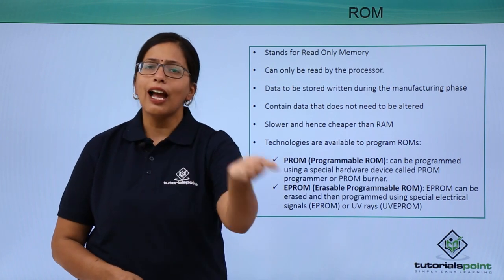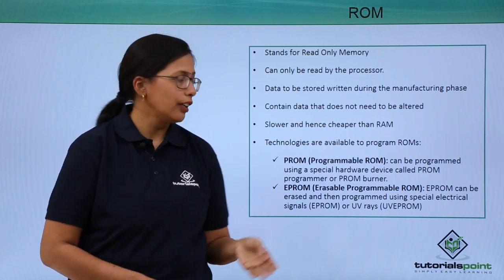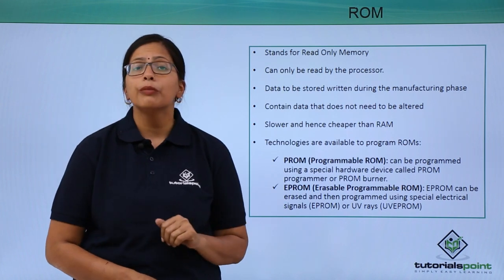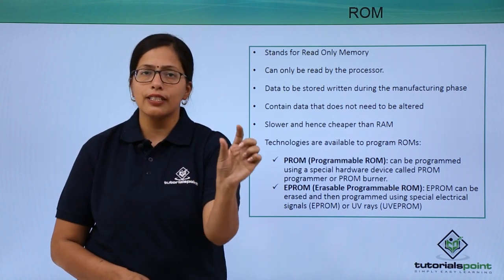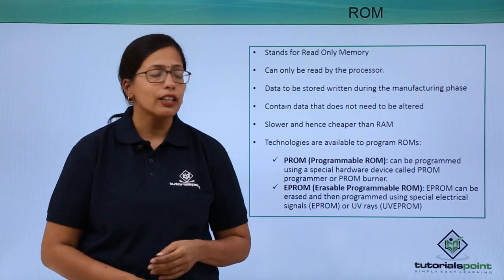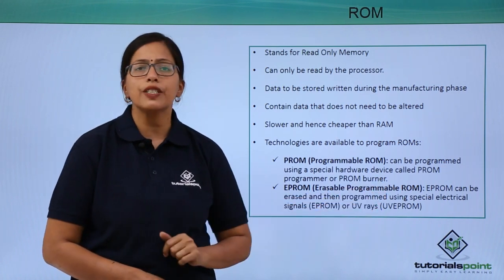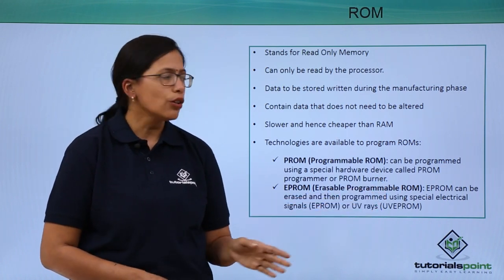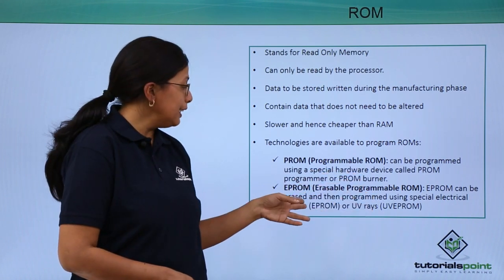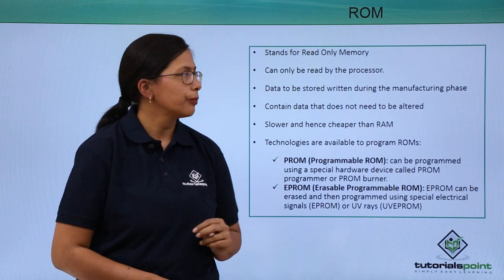Whatever is written in PROM, you can add to it, but you cannot erase anything. In the case of erasable PROM, you can erase what is existing and write something new. This erasing can be done by electrical signals or UV signals. So there are two types of EPROMs: EEPROMs and UVEPROM.